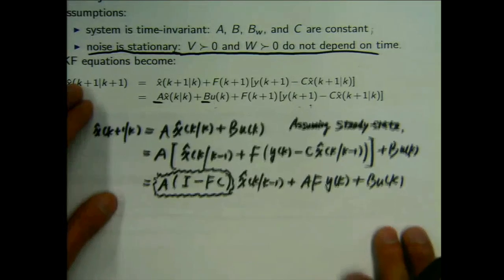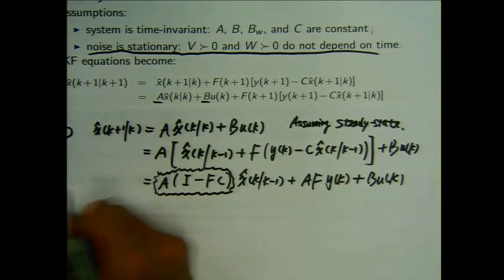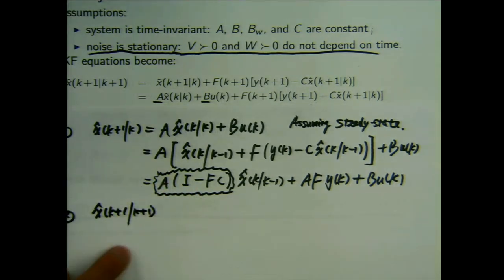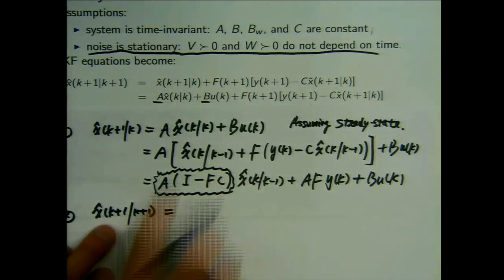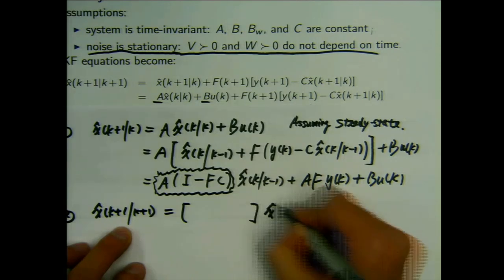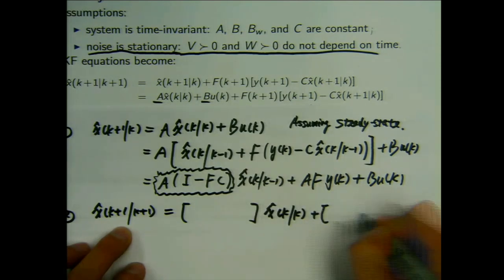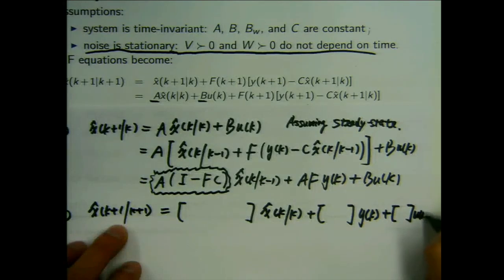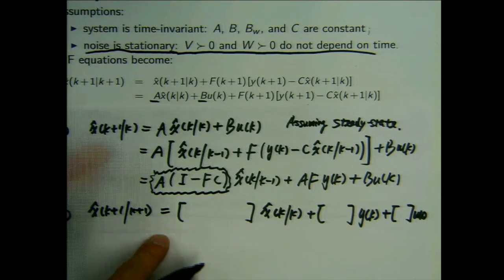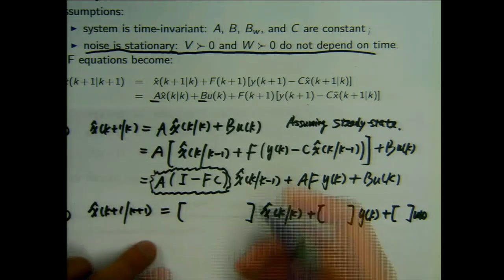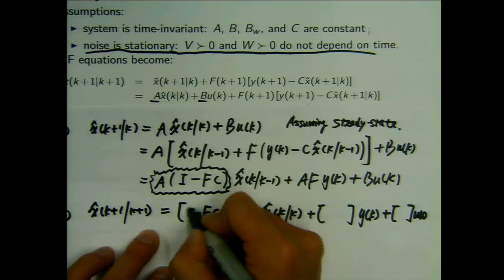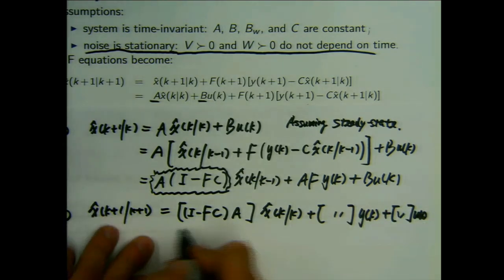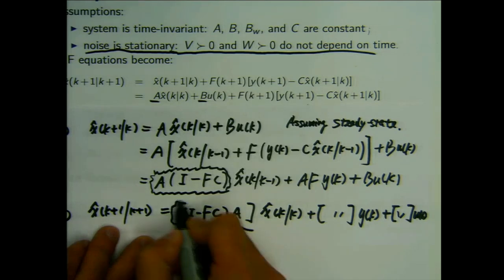Alternatively, I can express this kind of dynamics into an equivalent form. The result is going to be (I - FC)A times x-hat k|k. These two forms are equivalent and the steps to achieve this are exactly the same. I just want to show you that these matrices guarantee eigenvalues inside the unit circle.